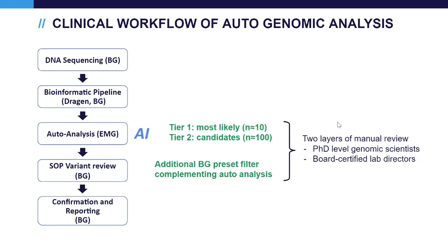This is our current workflow for automated analysis. Sequencing and bioinformatics calling is done at Baylor Genetics. The AI analysis is then performed in Emedgene, providing a first tier of 10 most-likely variants and a second tier of 100 candidate variants. In addition, we perform independent Baylor Genetics preset filtering to complement the automated analysis. All variants still undergo manual review by both scientists and lab directors, and final reporting is done at Baylor Genetics.